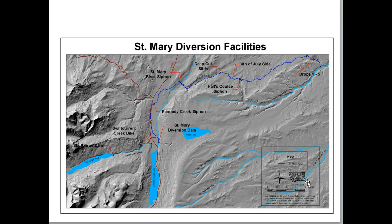One of the nice things about this map is that there's a small inset map showing where this is. One issue is that if I don't know where St. Mary diversion facilities are, I don't know what state or county — that location information would really be helpful. Also, I think the North Arrow is too big.